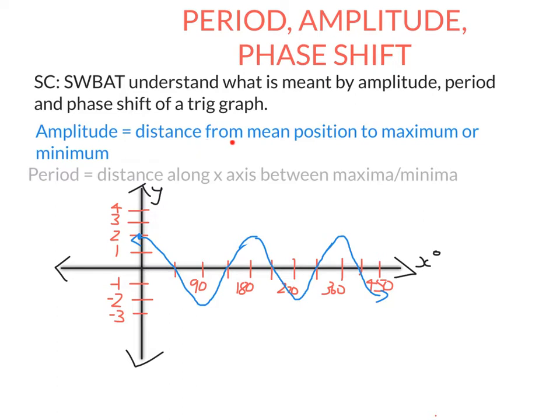So the definition of amplitude is the distance from the mean position to the maximum or the minimum. Down here we have a trigonometric graph. Remember, I talked about the mean or the middle position of the graph last time.